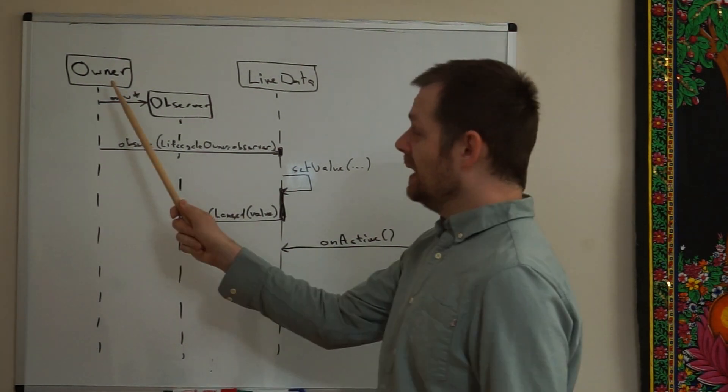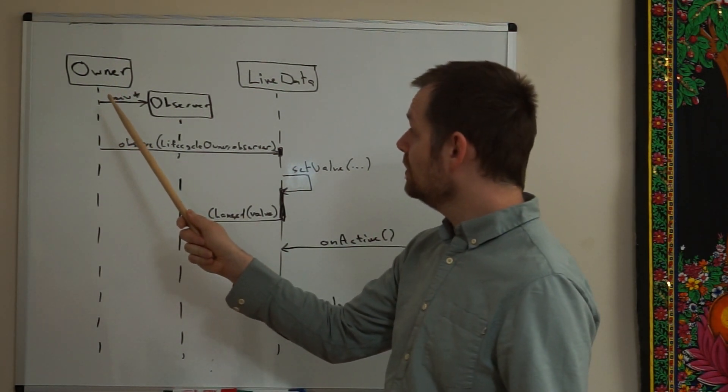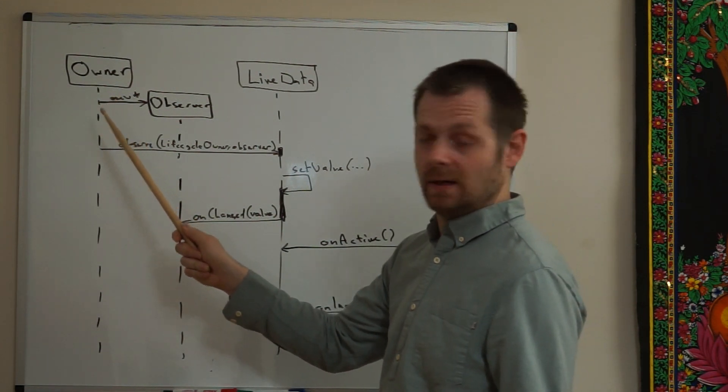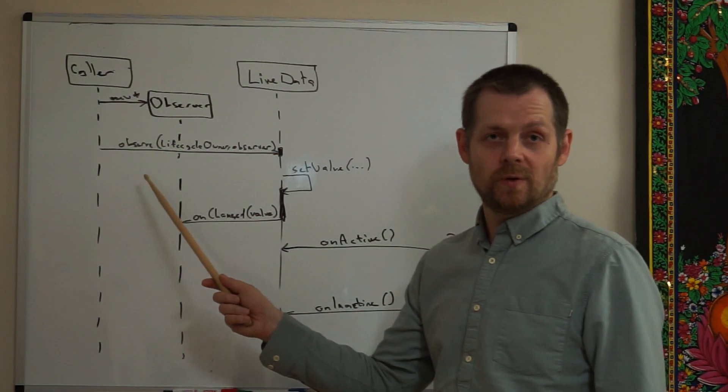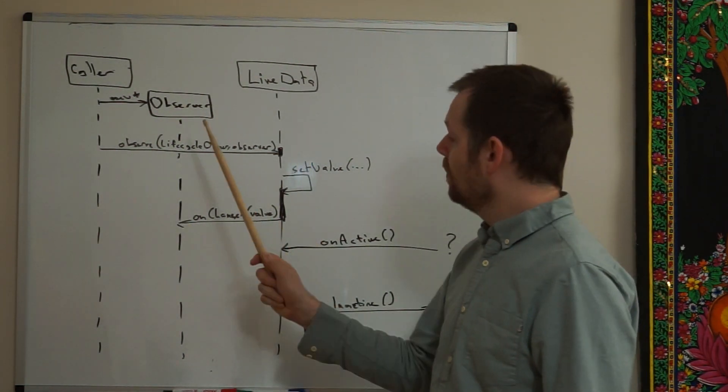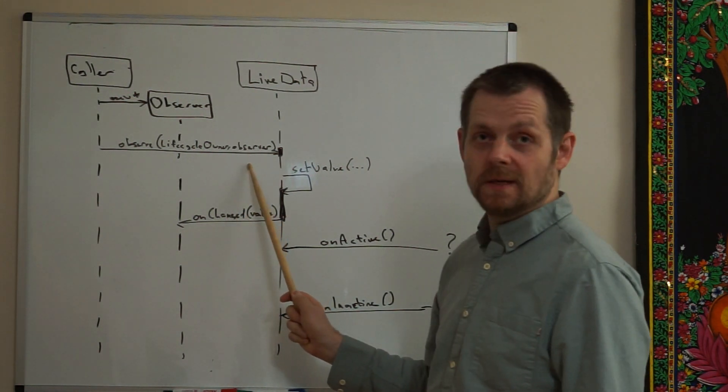In this case, we have an owner, the caller, the thing that observes the live data. The owner can be anything, like a view model. This is basically the calling code. The caller creates a new observer and the caller observes the live data with the arguments of lifecycle owner followed by the observer.